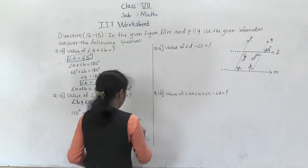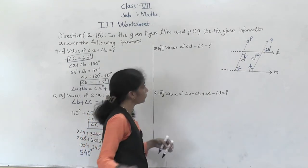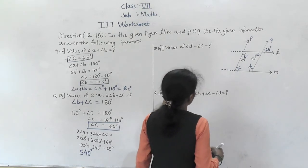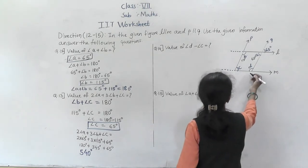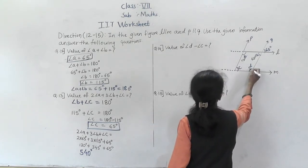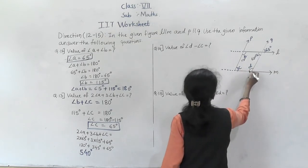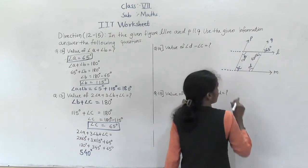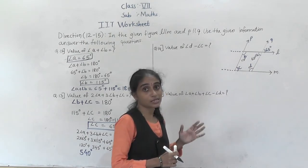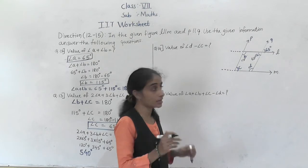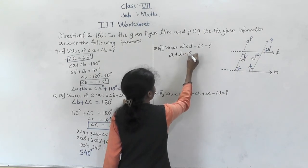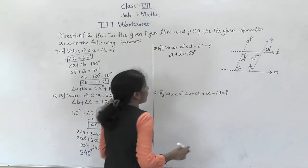Now question number 14: find the value of angle D minus angle C. We need to find angle D. These two lines are parallel, so this is the transversal. Interior angles made by the same side of the transversal are supplementary, so angle A plus angle D equals 180 degrees.